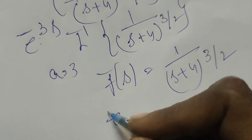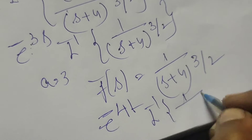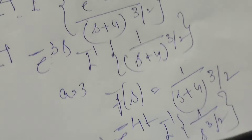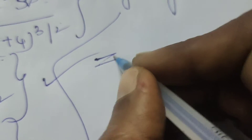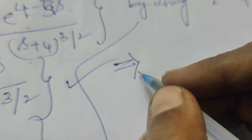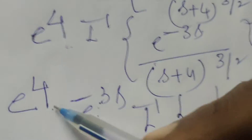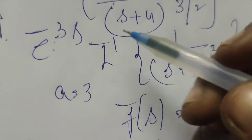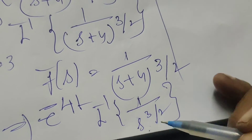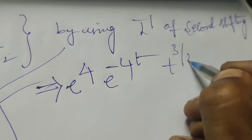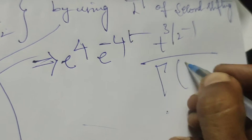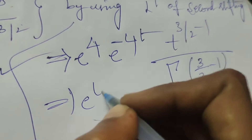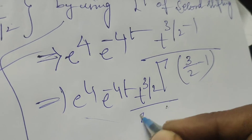The inverse Laplace transform of 1/(s+4)^(3/2) means we write e^(-4t) times the inverse Laplace transform of 1/s^(3/2), by the first shifting theorem. That gives us e^(-4t) times t^(3/2 - 1), using t^n / Γ(n+1), which is t^(3/2) / Γ(3/2 - 1), that is Γ(1/2).